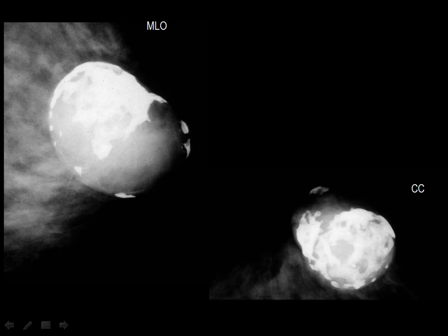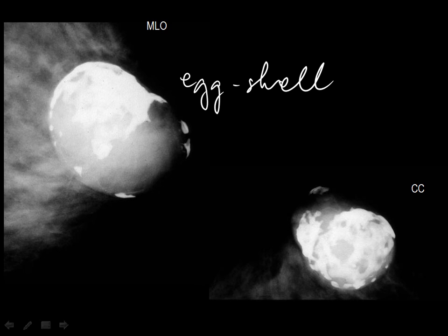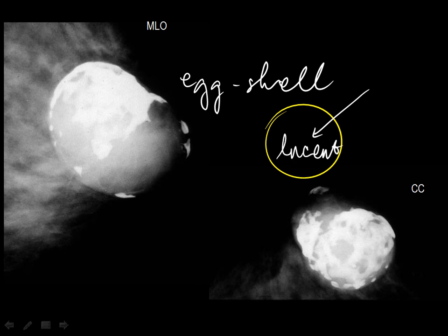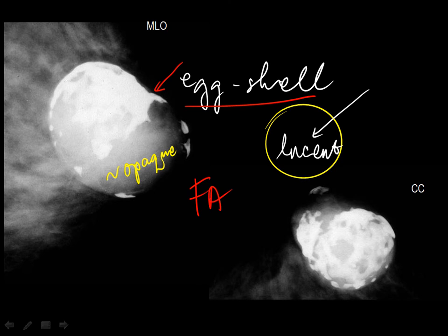A special subgroup of these calcifications is the eggshell-like calcification. Whenever we see eggshell-like calcifications on a mammogram, it is very important to ask: what is the density in the central portion? If it is radiolucent, then we talk about a partially calcified oil cyst. If it is radio-opaque and we see these coarse eggshell-like calcifications, then we talk about fibroadenoma.